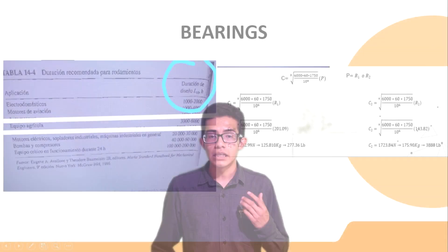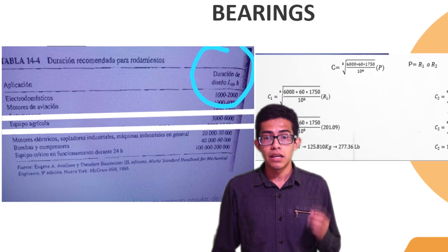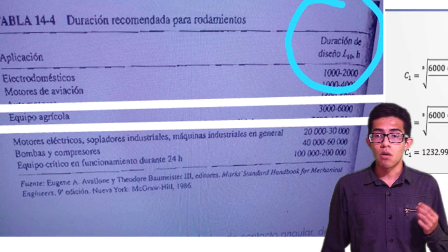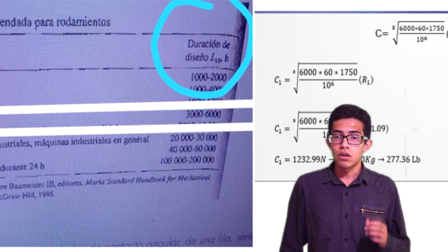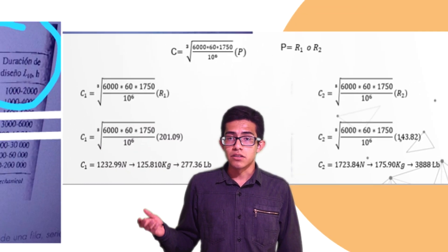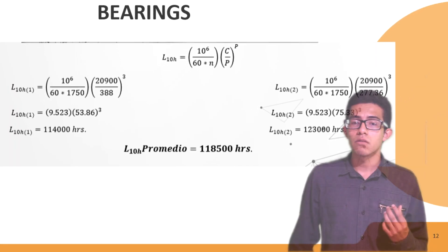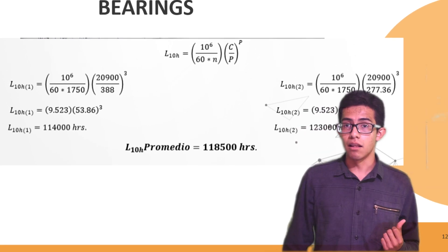In the calculation, using the overload service factor table for agricultural equipment, we could obtain the dynamic load and determine the expected working life. Once the belt was obtained, we were able to proceed to perform the calculation to obtain the average working hours of the belt.